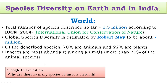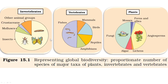There are pie diagrams in the textbook — Figure 15.1 — which are quite important from an examination point of view. They represent global biodiversity showing proportionate number of species of major taxa of plants, invertebrates, and vertebrates. In invertebrates, the maximum number of species are insects, followed by crustaceans and other animal groups.